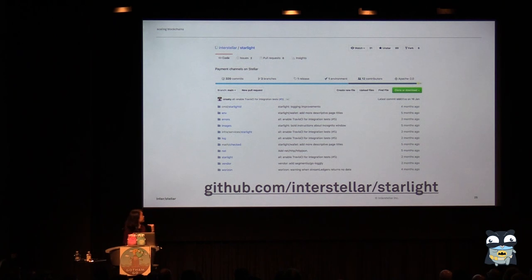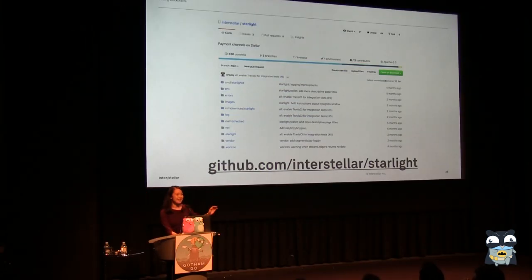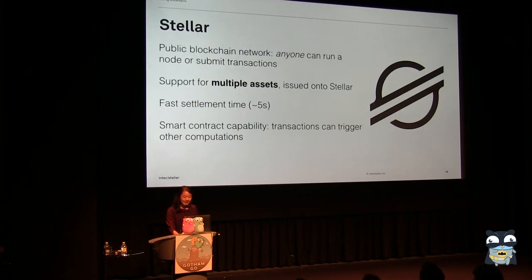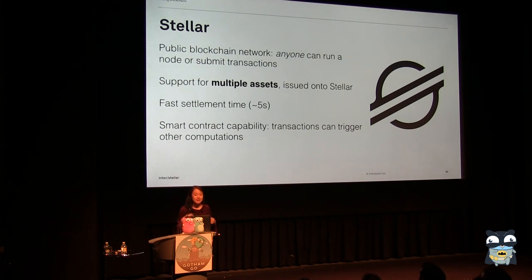And so this is what we've implemented in Starlight, which you can check out at github.com/interstellar/starlight. Importantly, Starlight is built on the Stellar network — Stellar is a public blockchain network, which means anyone can run a node or sign and submit transactions.